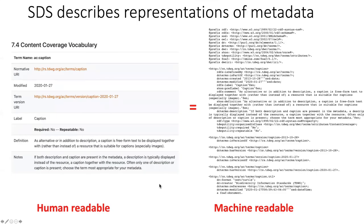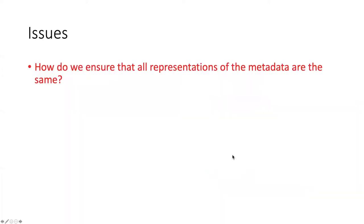One of the critical features of the SDS is that every representation of the metadata should be substantively the same. In other words, if you go to a human-readable document and see what the definition of a term is, you should get the same definition as you would get from the machine-readable metadata. That brings one of the first important issues: how do we make sure that all representations of metadata are the same?